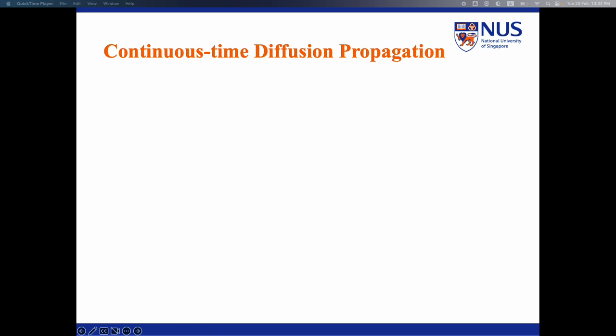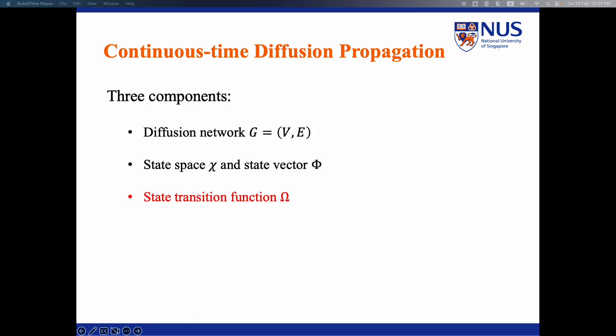A continuous time diffusion propagation is defined by three components. First, the diffusion network G. Second, state space K and state vector phi. Third, state transition function omega. Among them, the state transition function defines how the diffusion propagates.